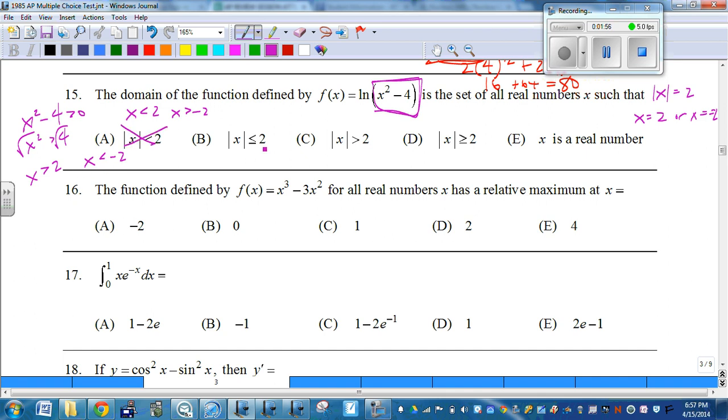We know it's not or equals 2, right? So that one's off the list. So is this one. We know it's not just a real number. We have a restriction here. So here, x is greater than 2 or x is less than negative 2. That's what we had.